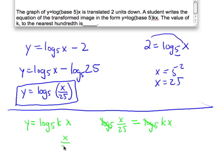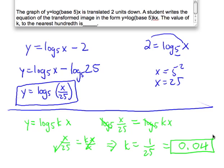That gives us x over 25 equals k times x. We divide both sides by x, so the x will cancel out. Therefore k equals 1 over 25. If you put that in the calculator, that gives you 0.04, and that's your answer.